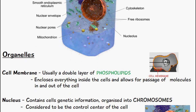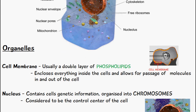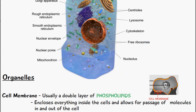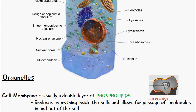Following on from this, we have a nucleus which contains the cell's genetic information and it's organized into chromosomes. It's considered to be the control center of the cell. Inside the nucleus is a nucleolus, and there are also ribosomes present inside.